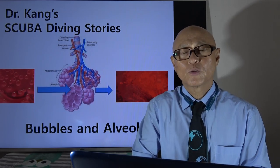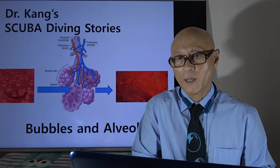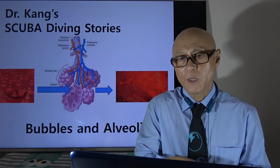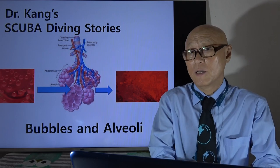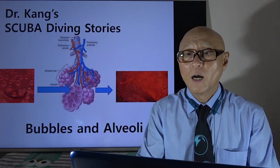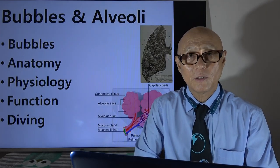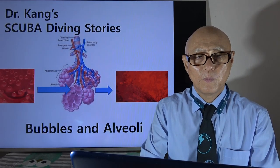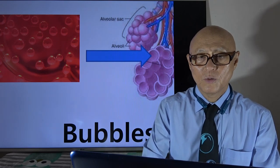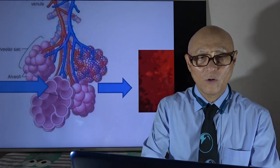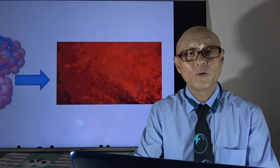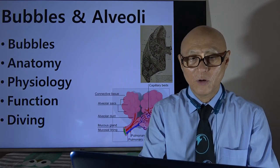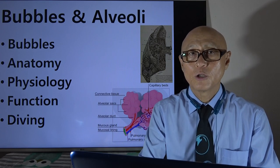Today's Dr. Gangju's scuba diving story goes to bubbles and alveoli. I want to talk about some miracles, some fantastic phenomena that happen in our lungs when we dive and when we surface. The topic is bubbles and alveoli — when we dive, we have bubbles in our blood circulation, they go to the heart, then to the alveolus, and after passing through the alveolus membrane the bubbles are gone. We'll talk about bubble formation, then alveoli anatomy, physiology, function, and the relationship to diving.